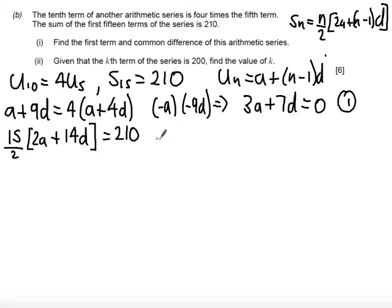Okay, so first thing I'm going to do is this equation is a little bit more complicated so I'm going to simplify it a little bit. I'm going to times both sides by 2 and I'm going to divide both sides by 15. So what happens in this case we get 420 divided by 15 gives me 28 so we get 2a plus 14d equals 28.